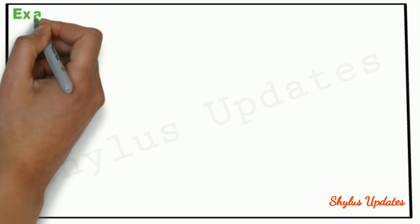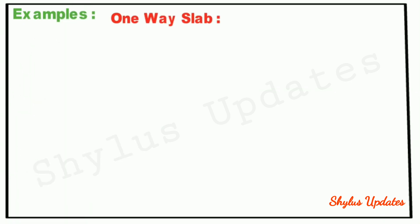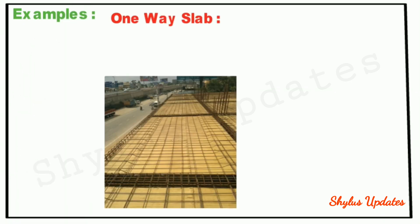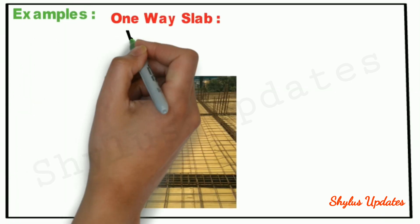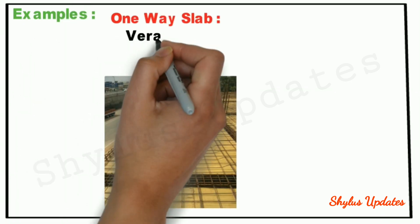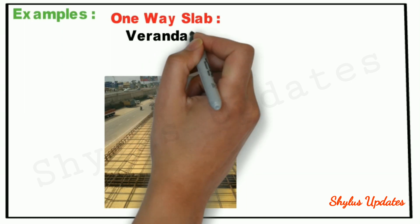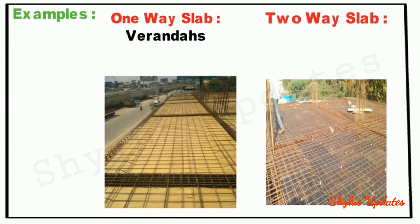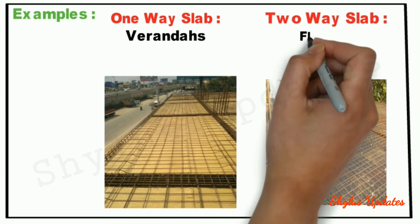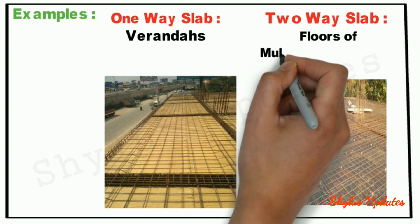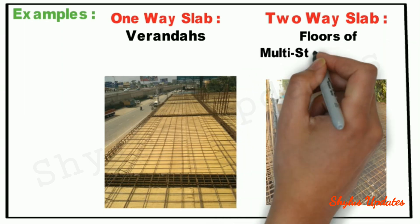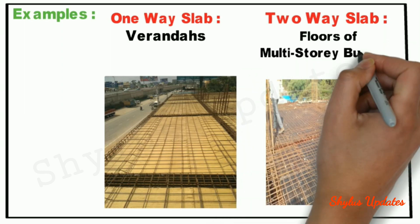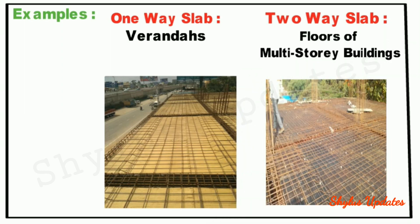Examples of 1-way slabs: Verandas — veranda slabs are 1-way slabs. Examples of 2-way slabs: Floors of multi-storey buildings are all examples of 2-way slabs.